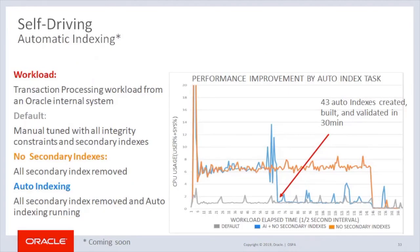Automatic indexing creates secondary indexes that are used to improve SQL performance, other than primary key and foreign key indexes. It applies to both tuned and untuned applications. For tuned applications, existing secondary indexes may be outdated or important ones can be missing, and some secondary indexes may also be dropped if they are no longer useful. For untuned applications, development frameworks and object-relational mappers often only generate primary key indexes and sometimes foreign key indexes. Auto indexing augments existing primary and foreign key constraints to improve performance. It supports single column and concatenated indexes, function-based indexes, and advanced low compression. In one example shown, ATP created 43 auto indexes in just 30 minutes to improve performance.